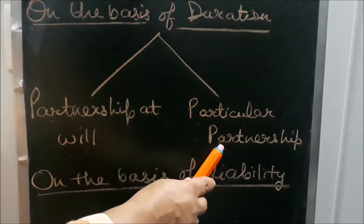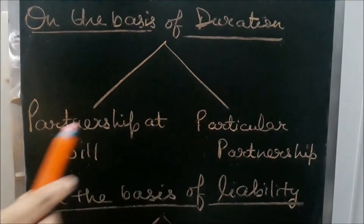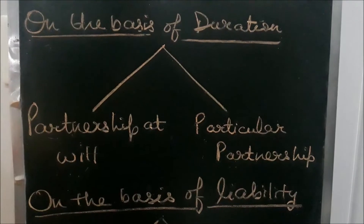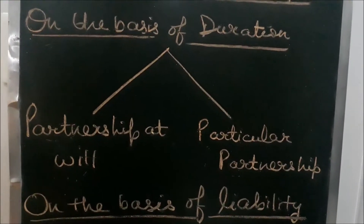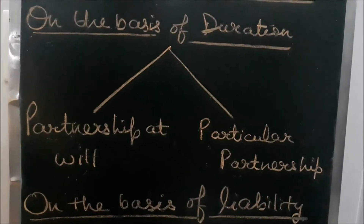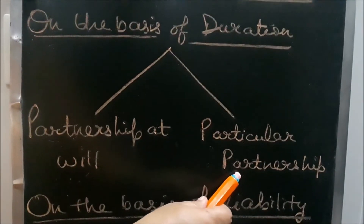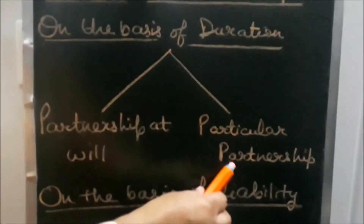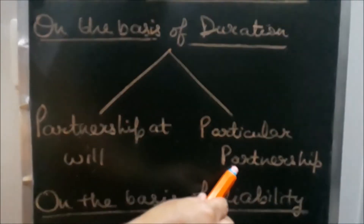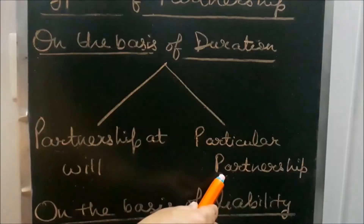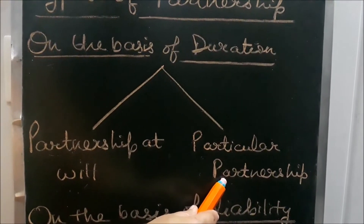The second type is particular partnership. This is a partnership done for a particular project, like construction of a flyover, bridge, or dam. It can also be done for a specific activity for a specific period of time. When that project is completed, the particular partnership comes to an end. Similarly, when the specified period is over, the partnership ends. So particular partnership is either for a particular project or for a particular period of time.